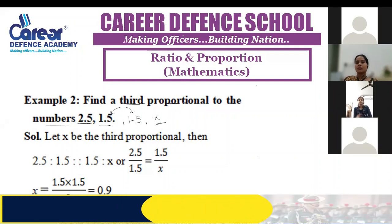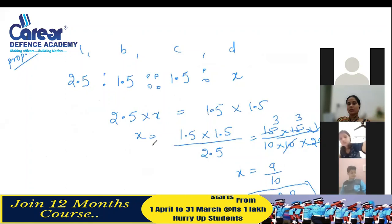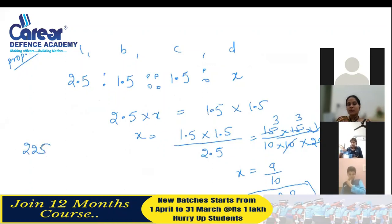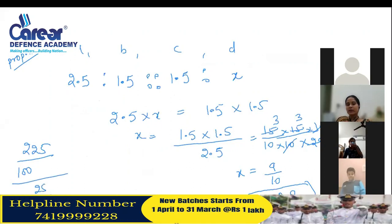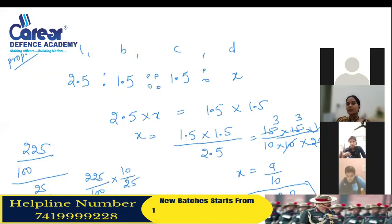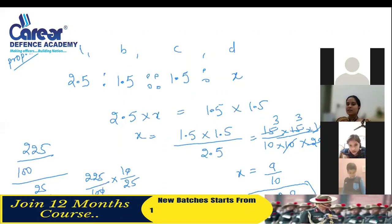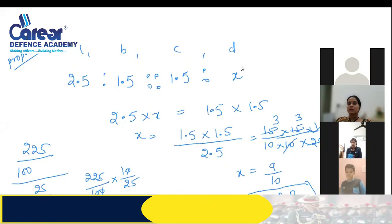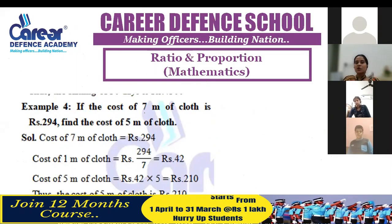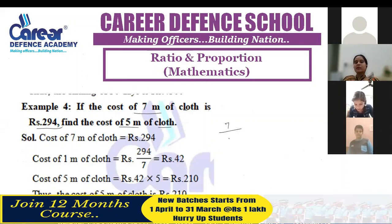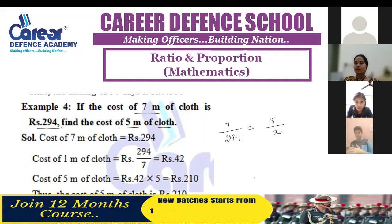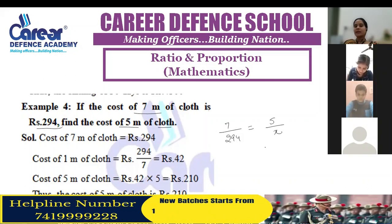We have 15 upon 100 and 25 upon 100. When there are two fractions like this, we take 25 by 10 — we invert the denominator fraction and multiply it. You will get the same answer from there. Next: if the cost of 7 metres of cloth is 294, find the cost of 5 metres of cloth. Can you do this question directly using property? Is there any doubt?